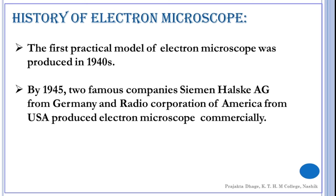By 1945, two famous companies produced electron microscope commercially. These companies were Siemens Halske AG from Germany and Radio Corporation of America from USA. This was the history of electron microscope after this commercial coming. Later on also there were many experimentations done, many advancements done. And today we have a very improved type of electron microscopes.